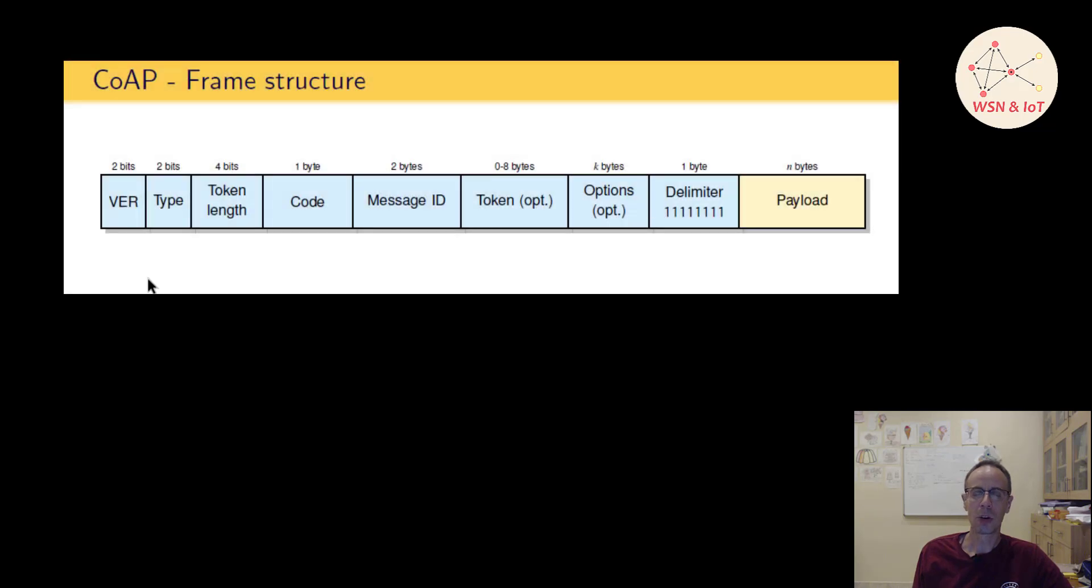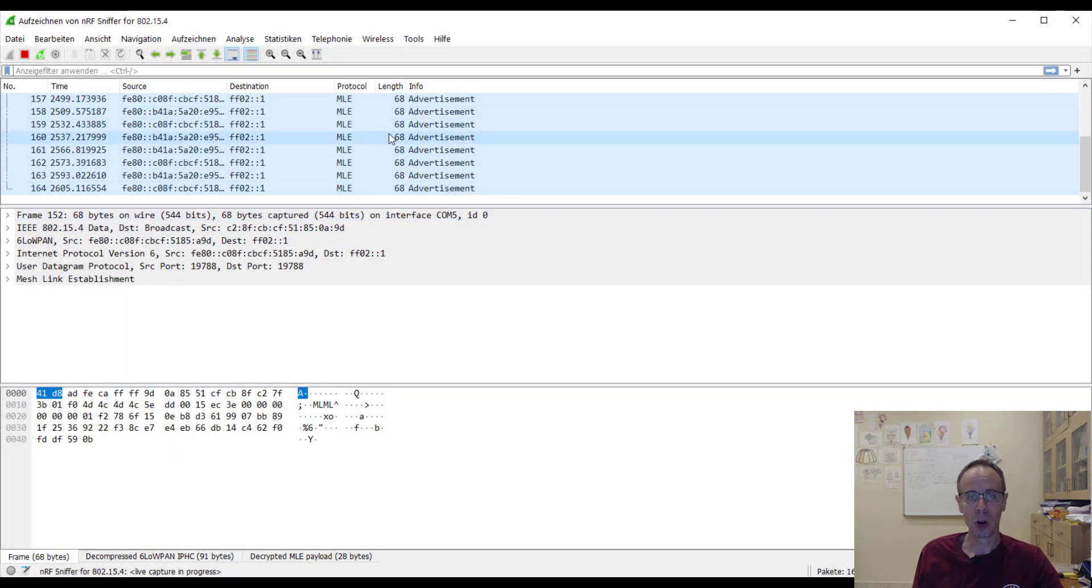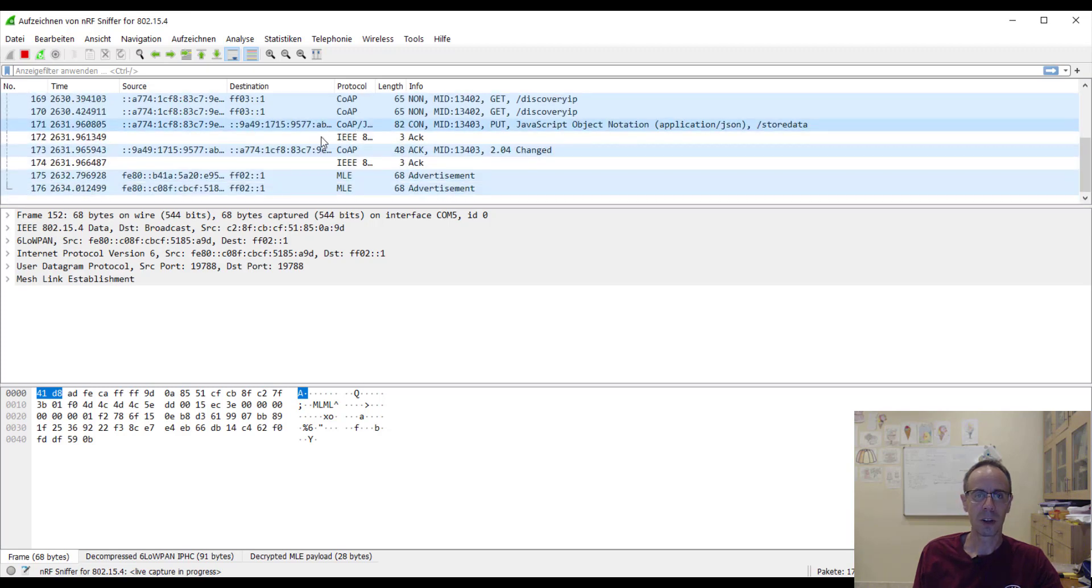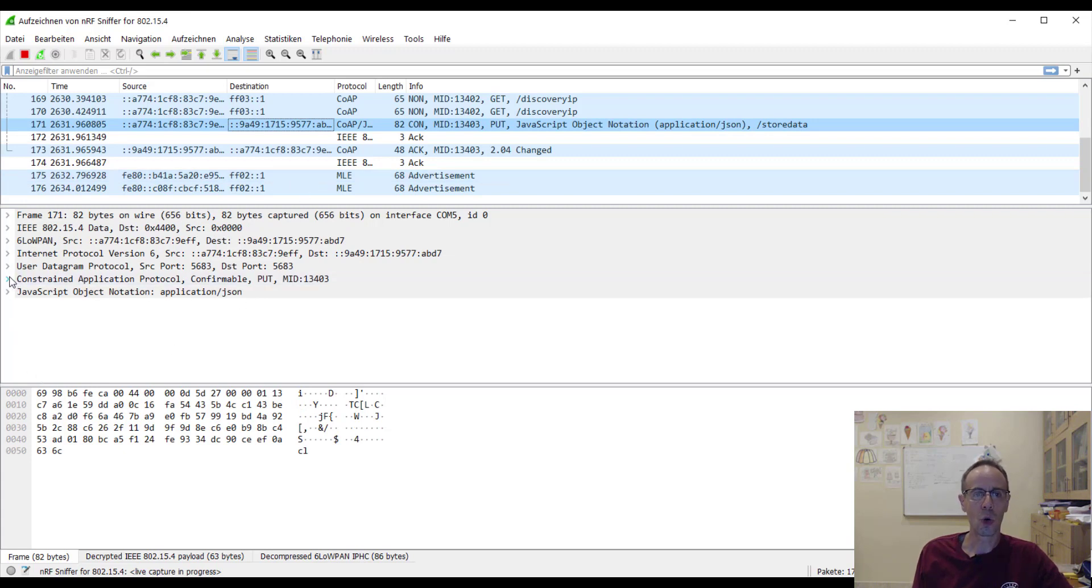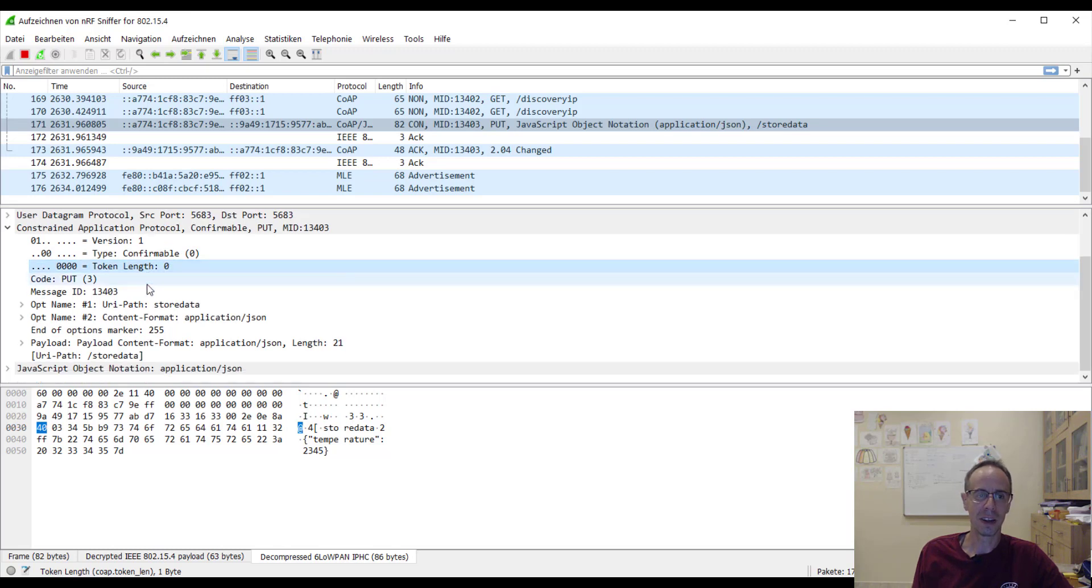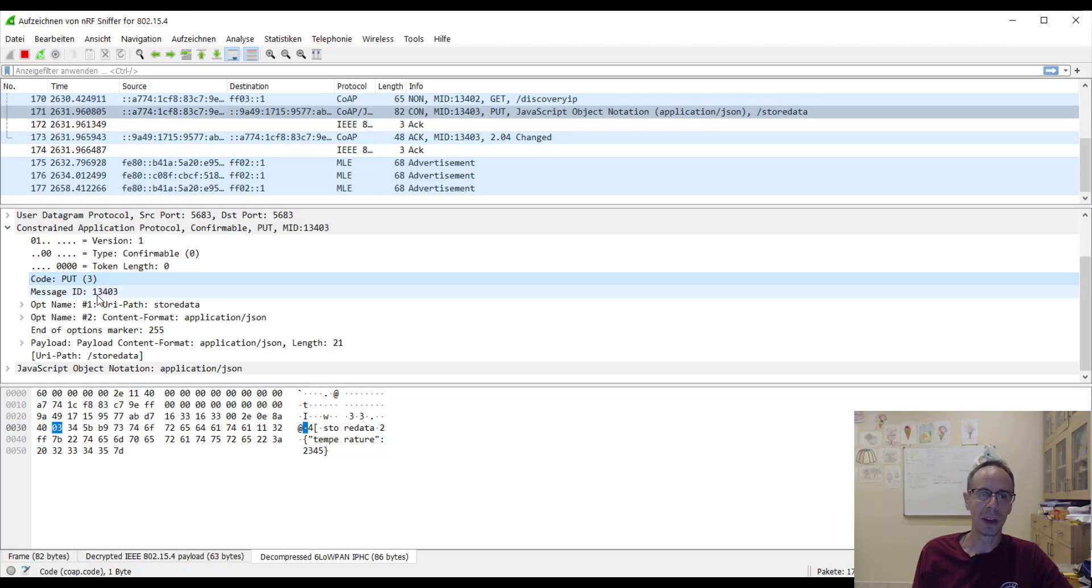Now we want to take a look with Wireshark if we can identify this frame structure here at an example. So I start Wireshark and send a CoAP message. So here we have one. I just open it and we're seeing here the CoAP header. And I can open it and we're seeing here we have first the version number, then the message type—in this case it's a confirmable message. Token length is zero, so I didn't specify any token.